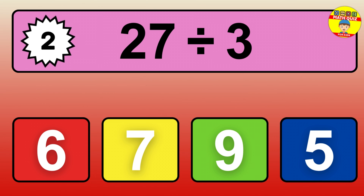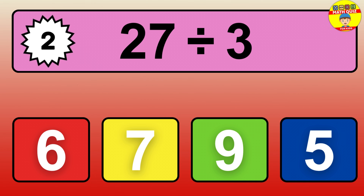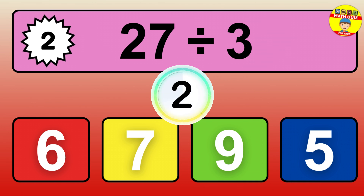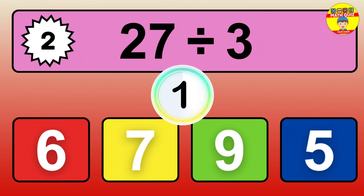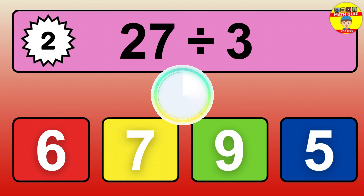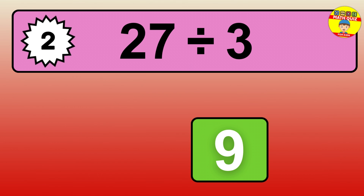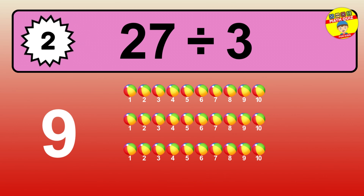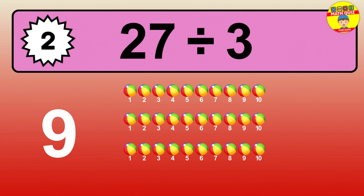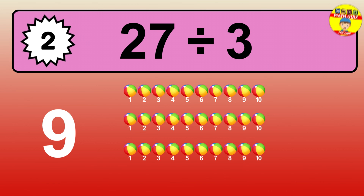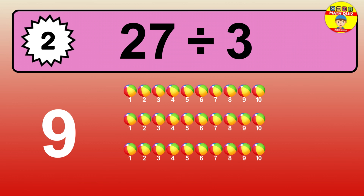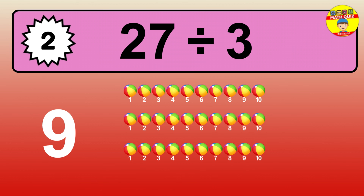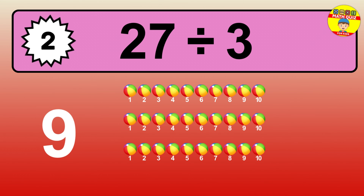27 divided by 3 is… time to think. Let's go to the solution. Divide the number 27 by 3. Each group contains 3 units, so dividing 27 by 3 results in 9 equal groups. Thus, the result is… 27 divided by 3 equals 9.